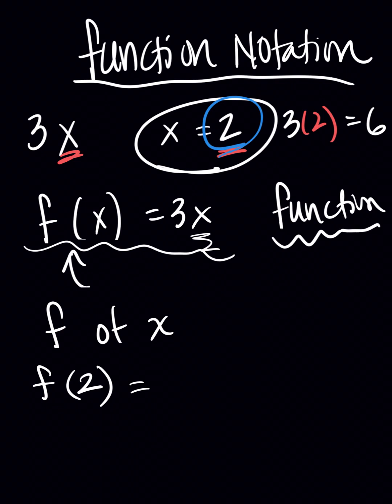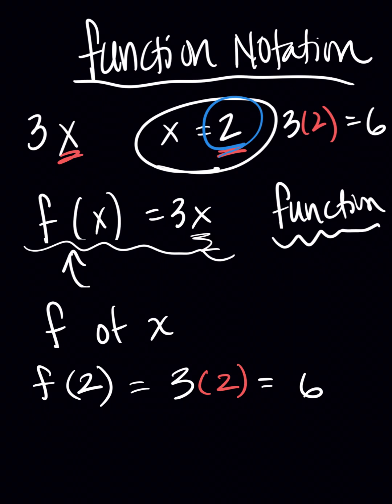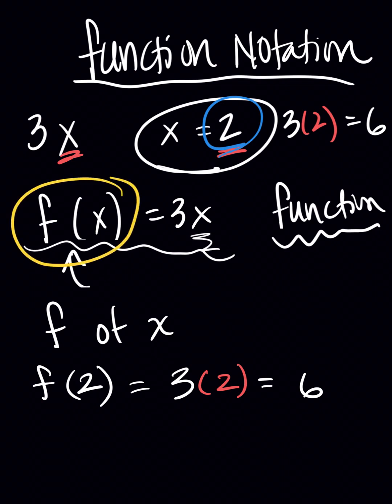So f of 2 would be the same thing as saying 3 times 2, just like we did before, and that would be equal to 6. So that's your function notation. Now, sometimes we could do this on a graph as well, because f of x is really just like another fancy way of saying y. y equals.